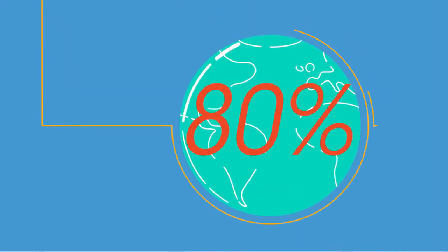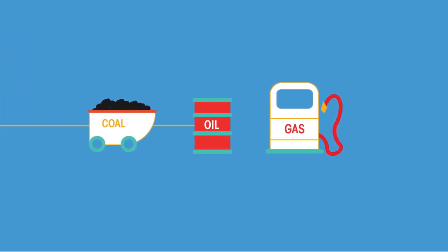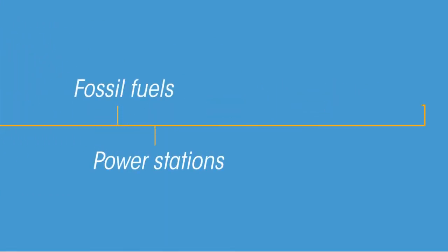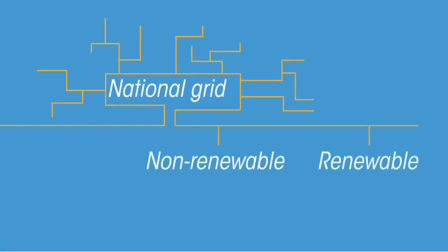Currently about 80% of the world's energy comes from fossil fuels. First we're going to have a look at burning fossil fuels in power stations to generate energy, and then we'll look at the national grid, which is relevant for both non-renewable and renewable energies.